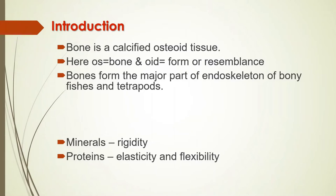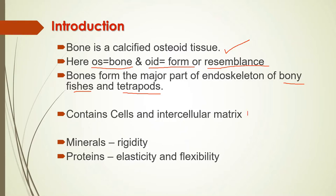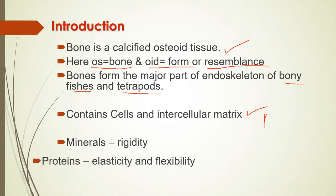Bone is a calcified osteoid tissue. Here 'os' means bone and 'oid' means form or resemblance with bone. Bones form the major part of the endoskeleton of bony fishes and tetrapods. Bone consists of cells and an intercellular matrix. Bone is comprised of a rigid matrix of calcium salts deposited around protein fibers.